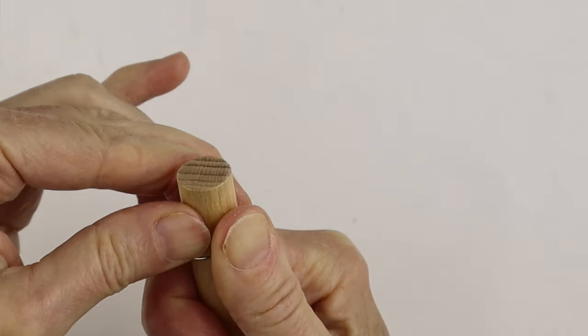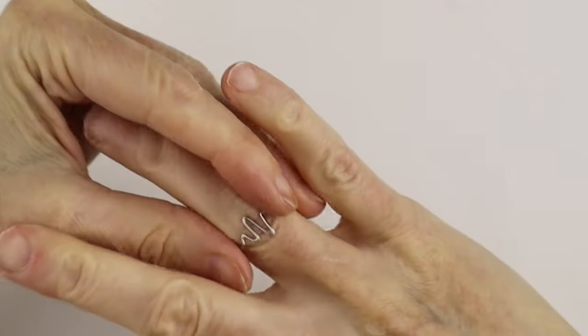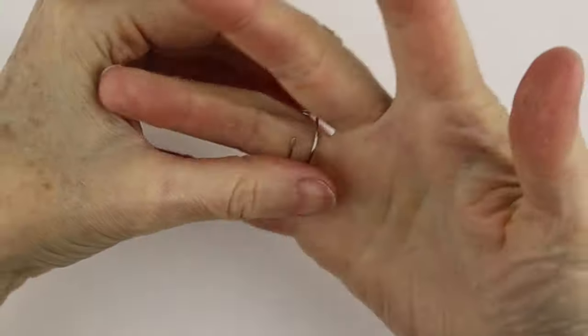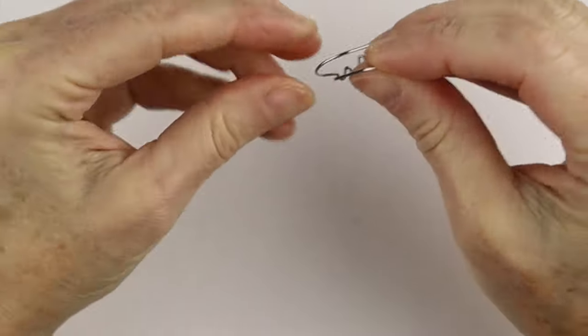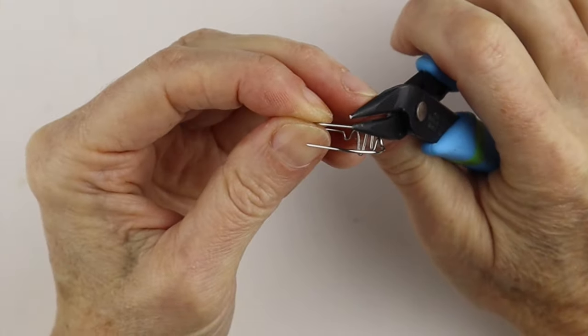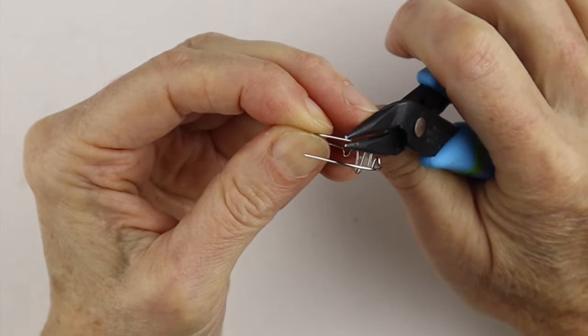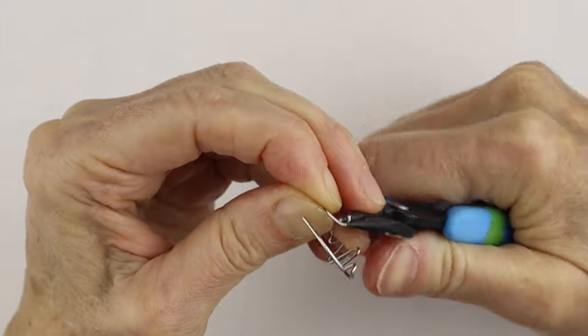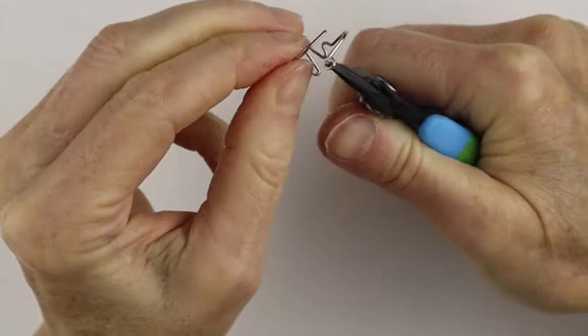Then you can just try it on your finger to see if it's a good size. From there you can either clip the ends or make them into loops. If you want to make them into loops, just get your round pliers, bring it around into the loop, and then this side too, just loop it around.